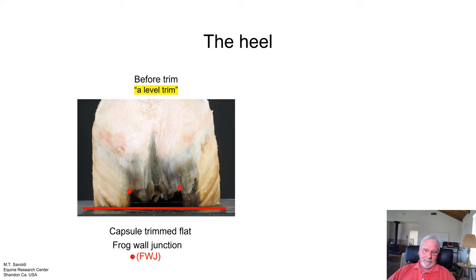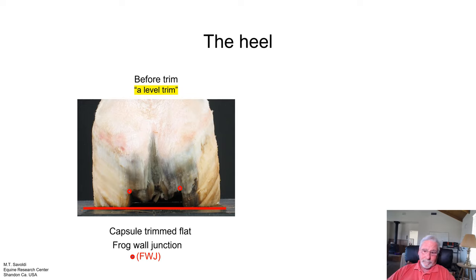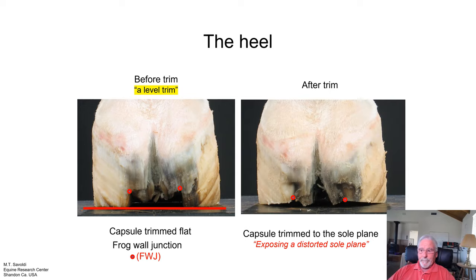When you stand in the back of a foot and look at the separation between the frog and the wall — that's the frog-wall junction — it will give you an idea of how the foot is standing. You notice that the frog-wall junctions aren't the same: this horse has less heel on the left side than on the right side, and that's altering the plane of the capsule, which can have major effects on bone.